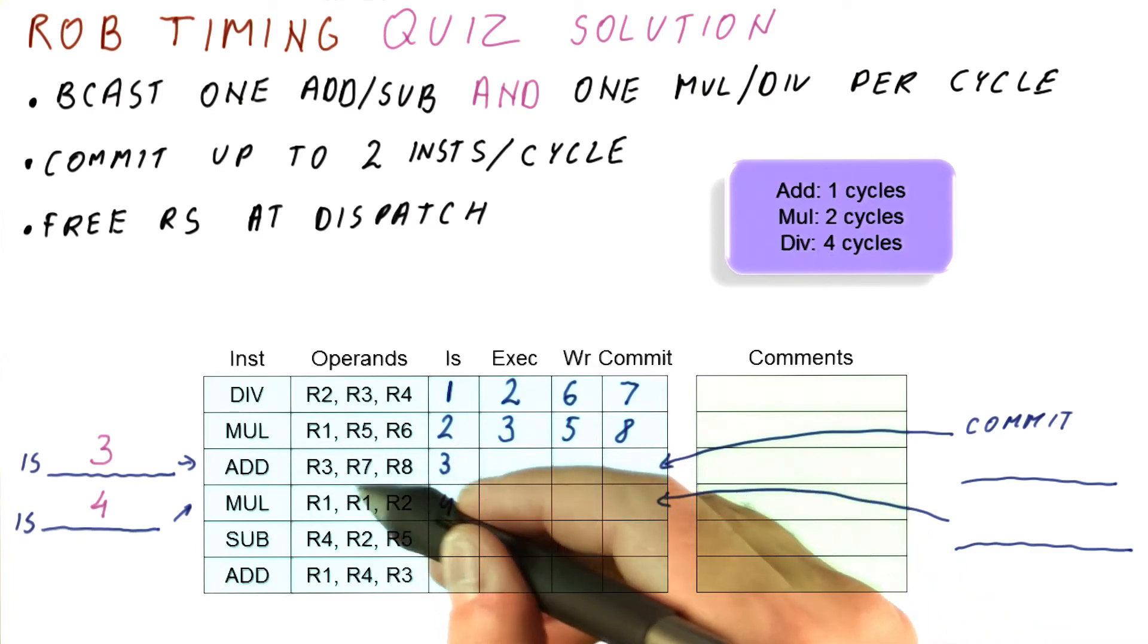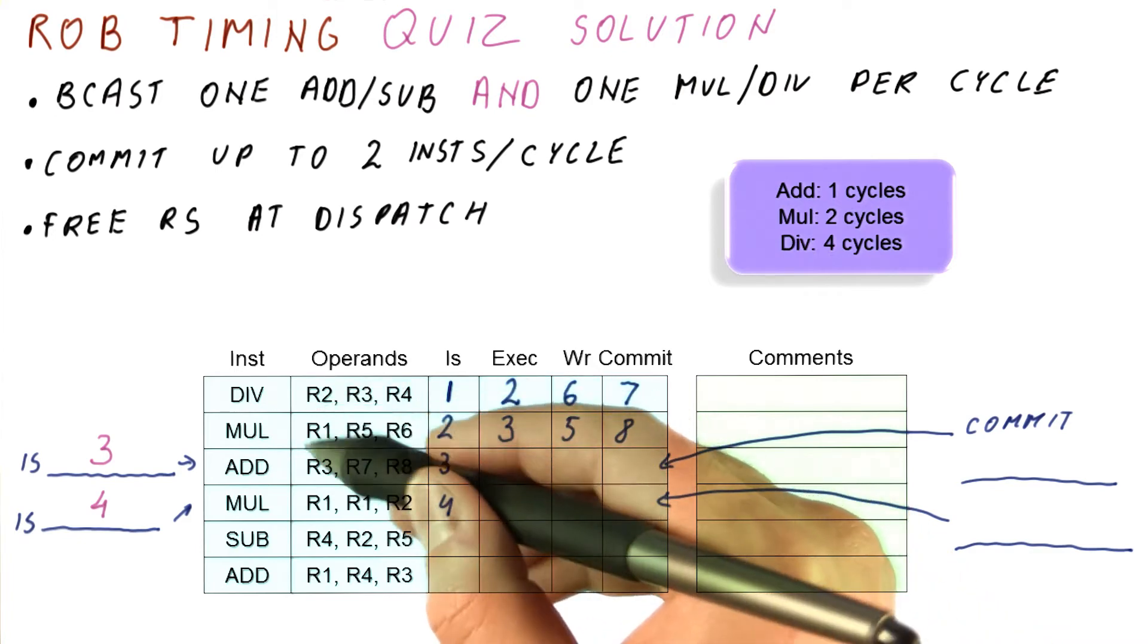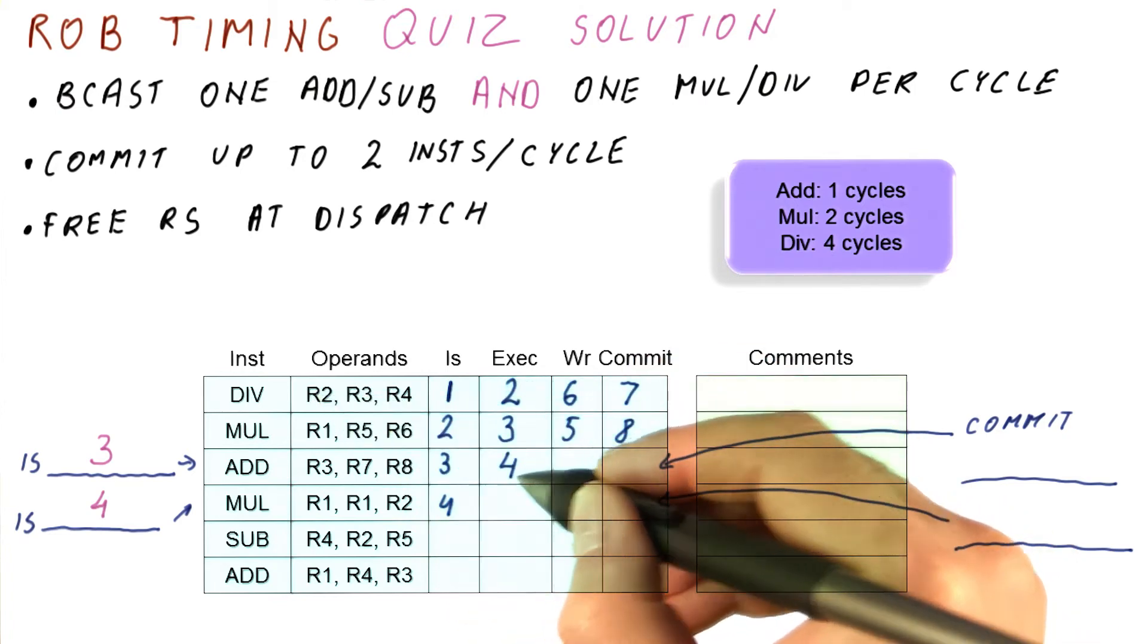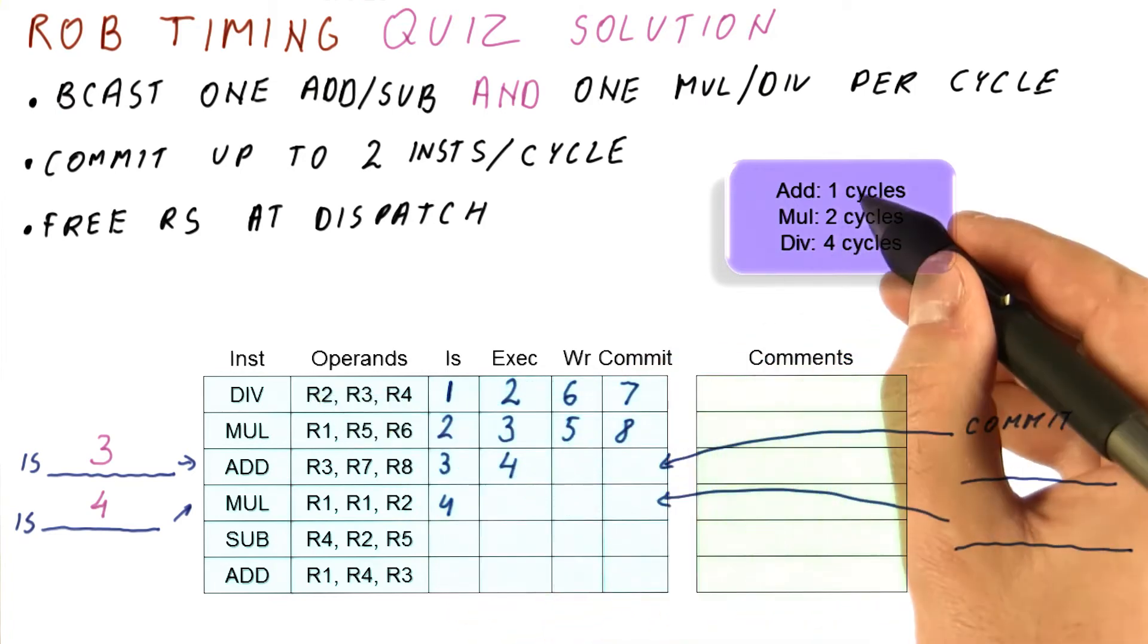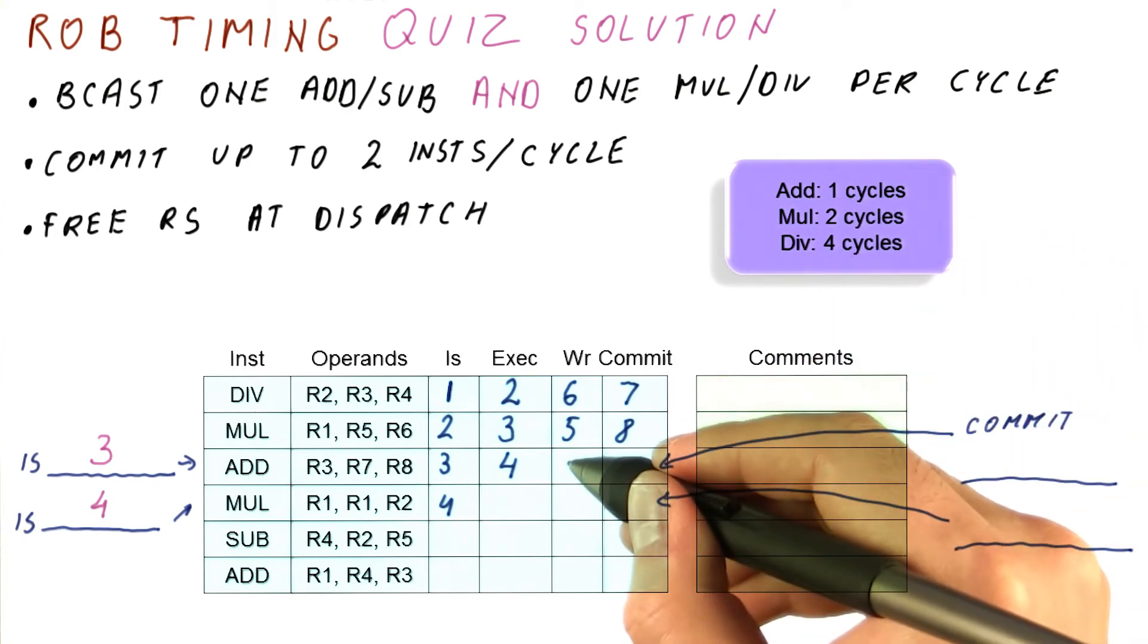The add uses R7 and R8. Those are not written by any of the previous instructions, so the add can actually begin execution in cycle four. And because it takes only one cycle, it will try to write the result in cycle five.